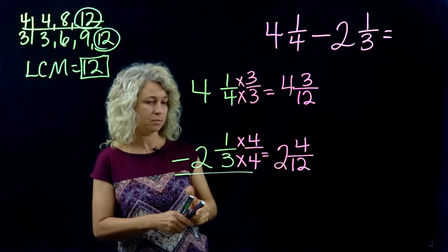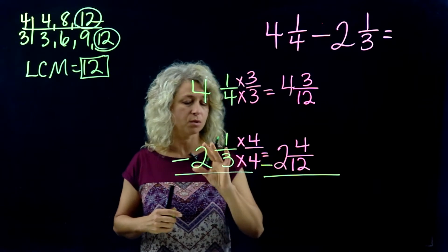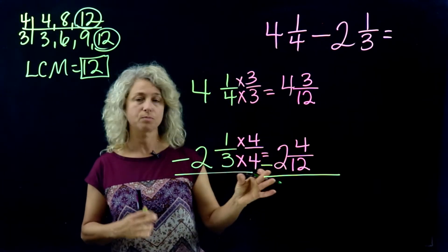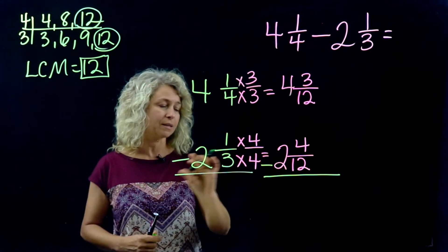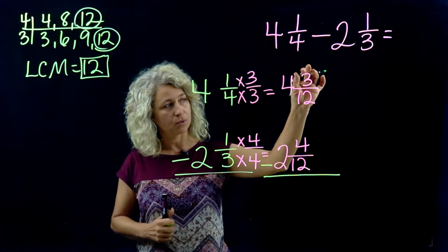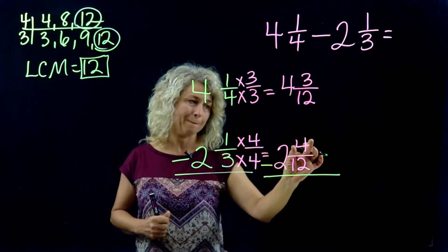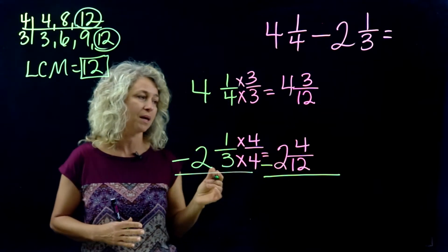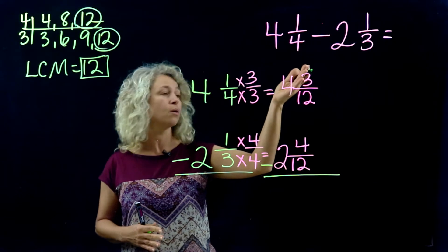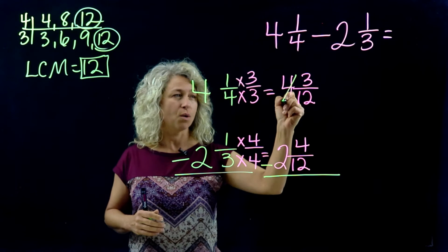Now remember the sign. This is where a lot of my students make mistakes—they forget if they're adding or subtracting. Remember we're subtracting. Now when you're looking at the numerators we would normally say 3 minus 4, but you know you can't do that because that would be a negative number. You can't take 4 away from a lesser number, so some regrouping is required.